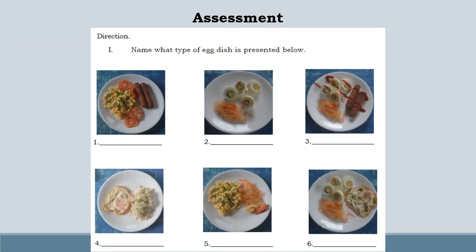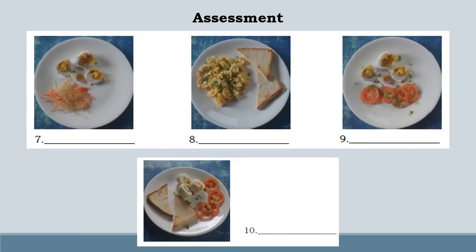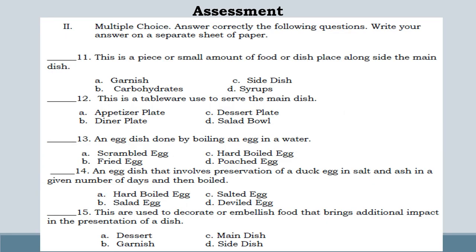Assessment — Direction: Name what type of egg dish is presented below. You can pause this video to answer the question. Multiple choice: answer correctly the following questions. Write your answer on a separate sheet of paper. Number 11: this is a piece or small amount of food or dish placed alongside the main dish. Letter A: Garnish. Letter B: Carbohydrates. Letter C: Side dish. Letter D: Zero.